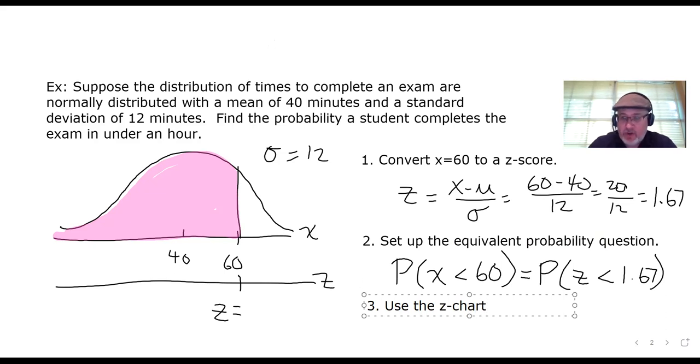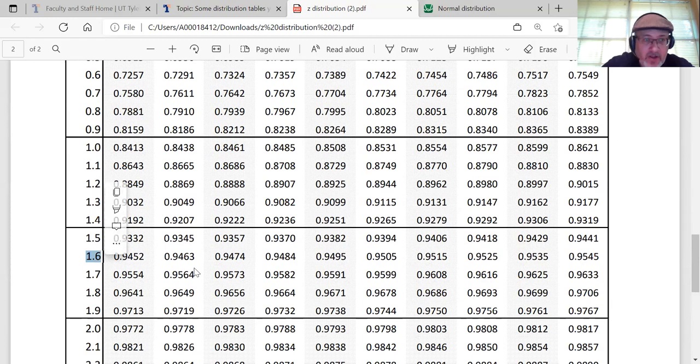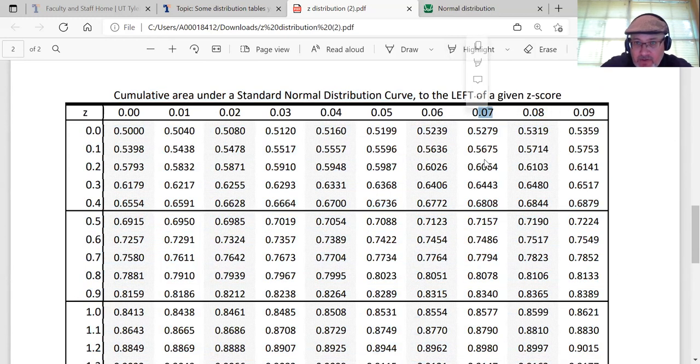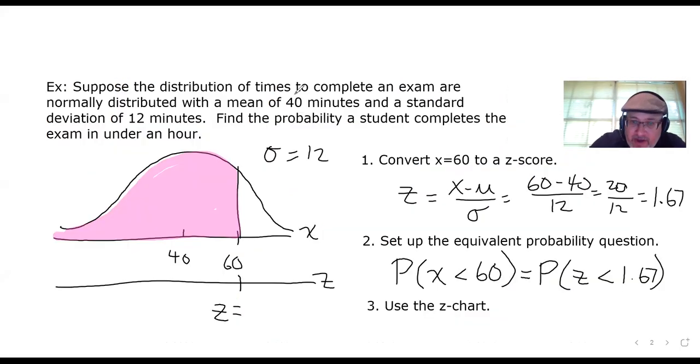As noted in the last video, all we have to do here is actually go to the Z chart and look up 1.67 since the Z chart tells us the area to the left of a Z score. Let's go check out that Z chart and we're looking for Z equals 1.67. Here's the 1.6 row and the seven column is this one. So we go down to this column and look at the 1.6 row and the intersection is right here. Looks like the area to the left of Z equals 1.67 is 0.9525.